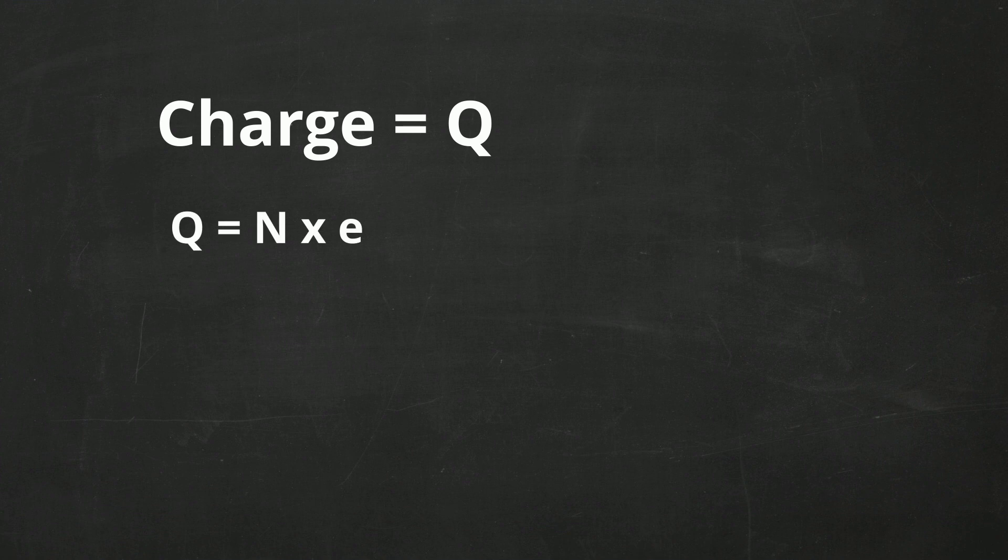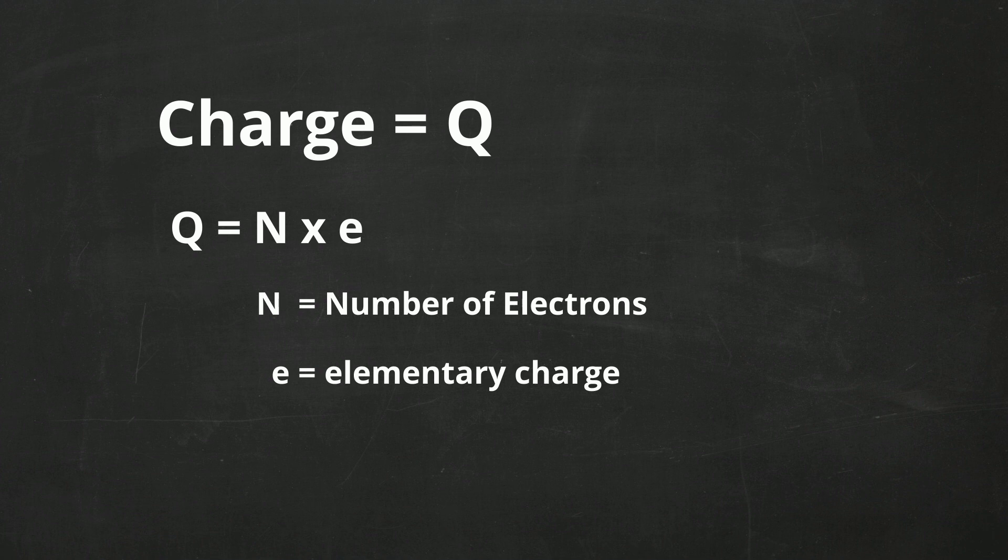N equals the number of electrons, and e equals the elementary charge—remember the number 1.6 times 10 to the minus 19.